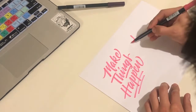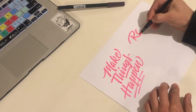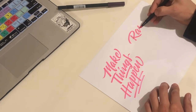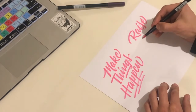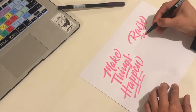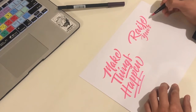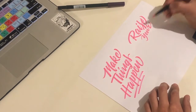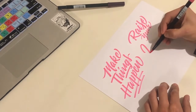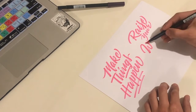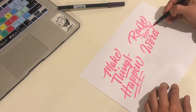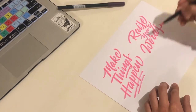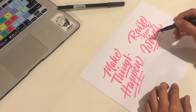My process always starts by writing the concept I want to talk about, and then I try to make at least ten different sentences with the same concept. I do this because some word combinations don't look really good. So sketching different ideas allows me to see which one has the most strength and potential to become a good piece of lettering.